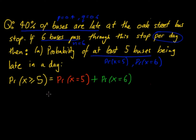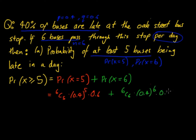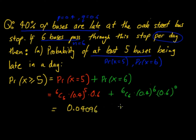Substituting into the binomial formula: 6C5 times 0.4 to the power of five times 0.6 to the power of one, plus 6C6 times 0.4 to the power of six times 0.6 to the power of zero. Remember, any number to the power of zero equals one. Sub this into your calculator and you get a probability of 0.04096, which as a percentage is 4.096%.